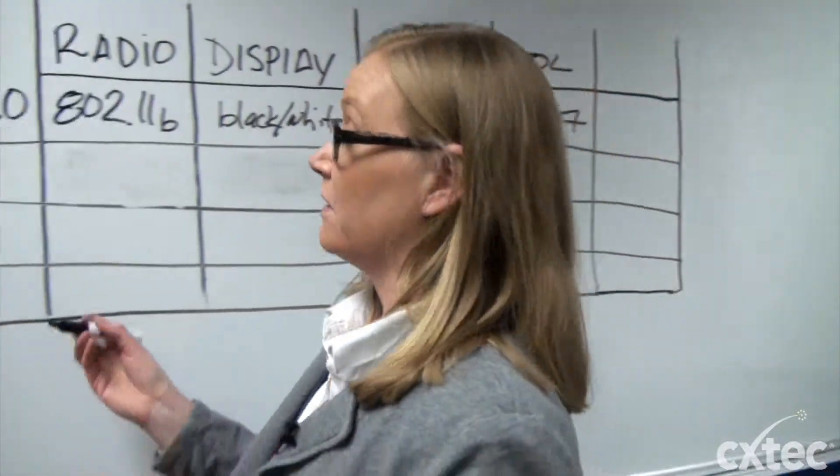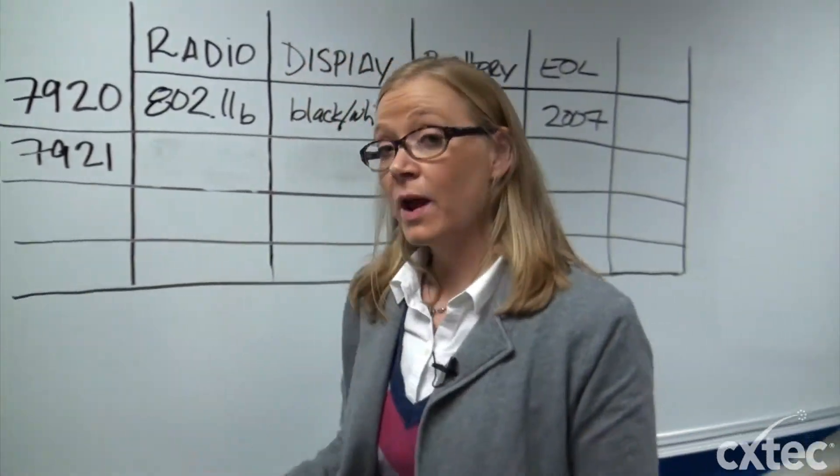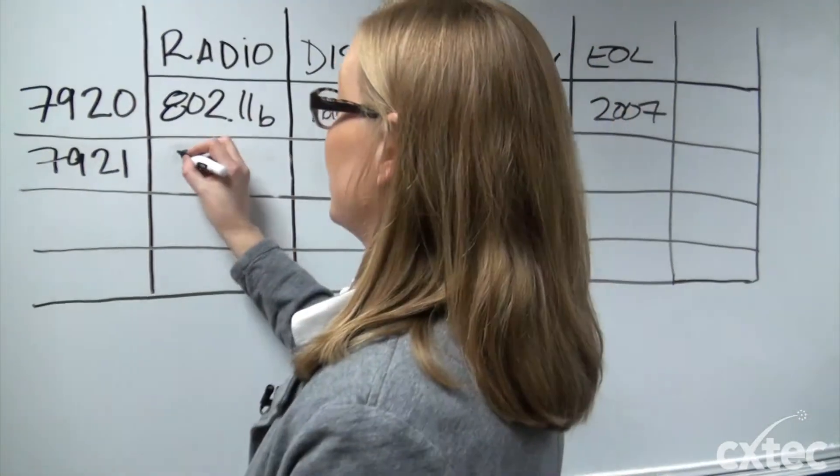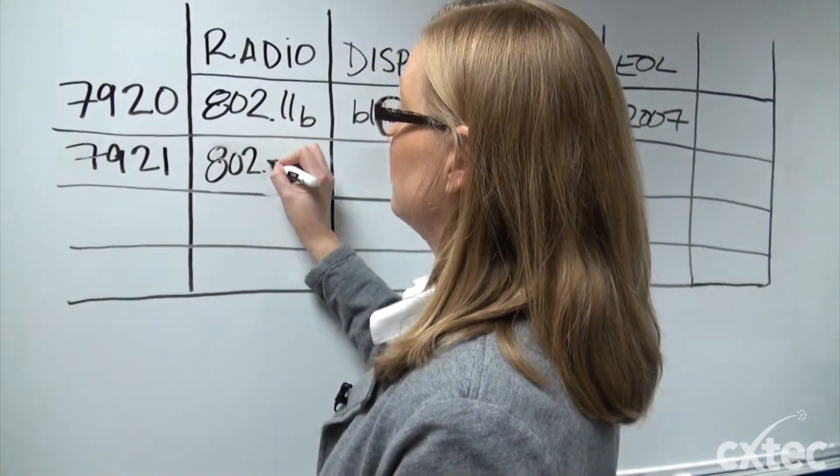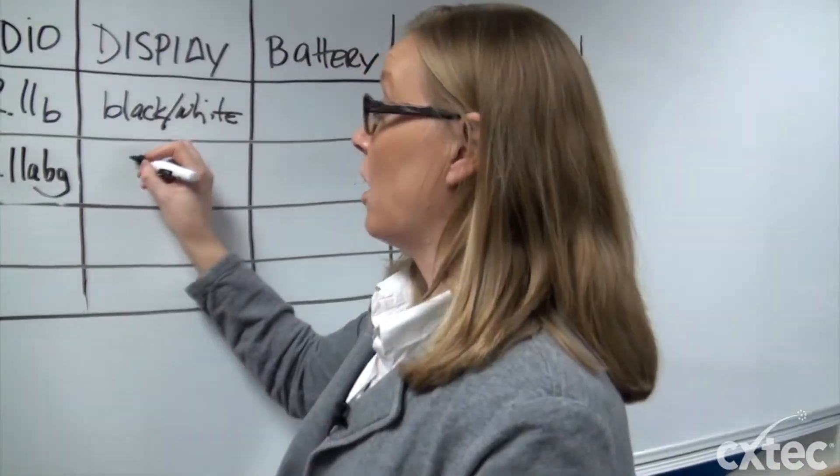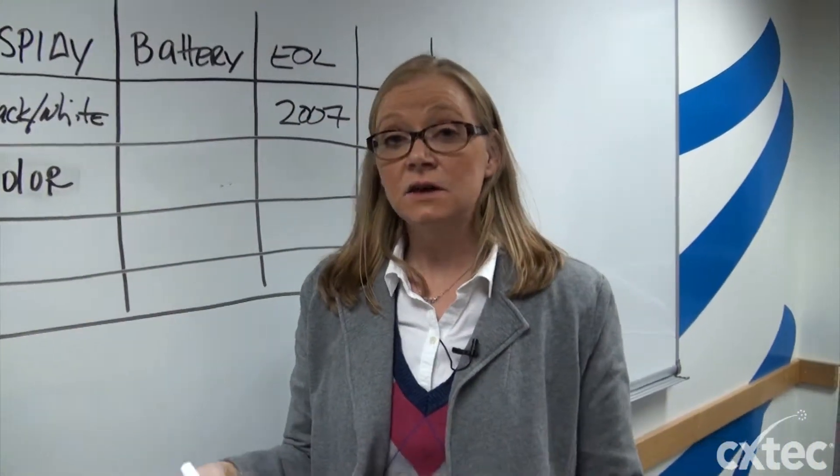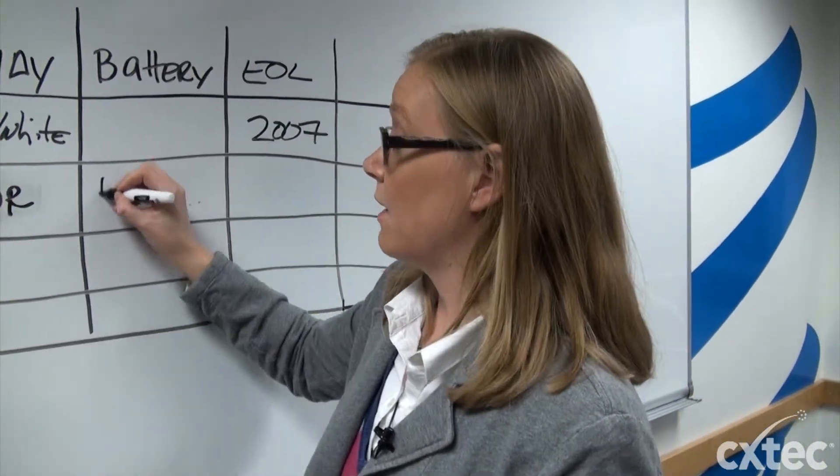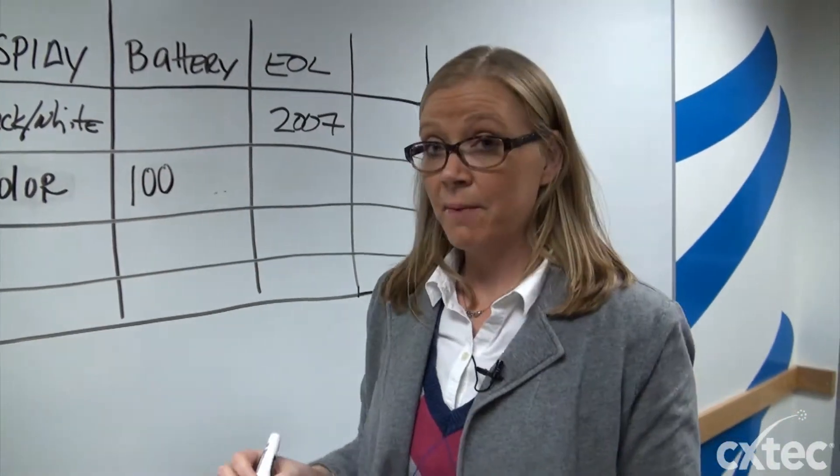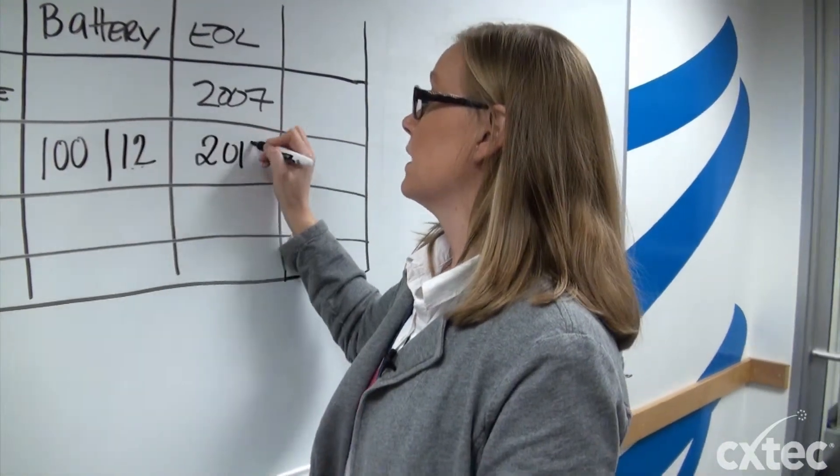The second wireless model that Cisco introduced was the 7921. They upgraded the radio on this model and this radio actually supports 802.11a, b, and g. This also has a color display on the handset and the battery has an upgrade at this point also. It now has a hundred hours of standby life and twelve hours of talk time. This model was end of life by Cisco in 2011.